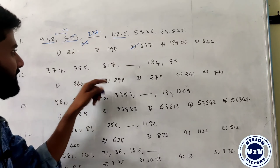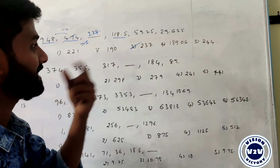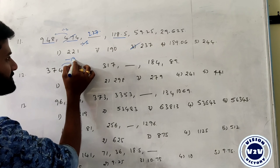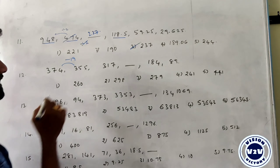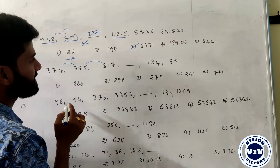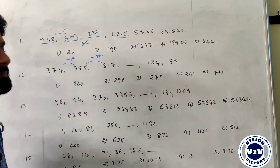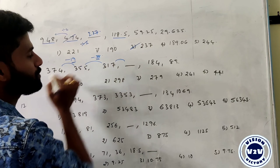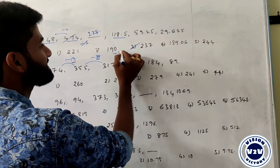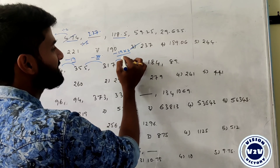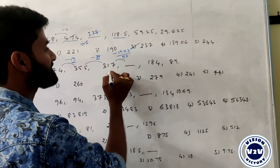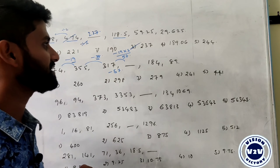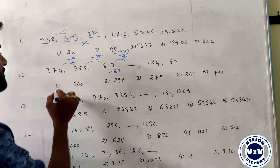Next: 374, 355, 317, 189, 184, 19. The differences are: minus 19, minus 38 (19 times 2), minus 57 (19 times 3). So the subtraction increases by multiples of 19. 317 minus 57 gives 260. The answer is 260.